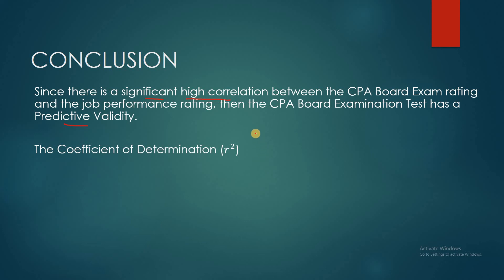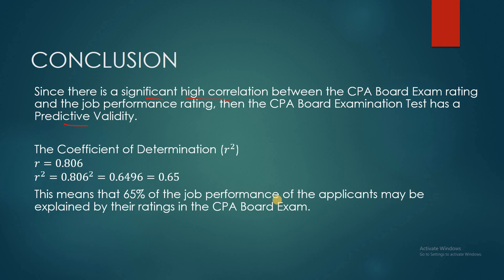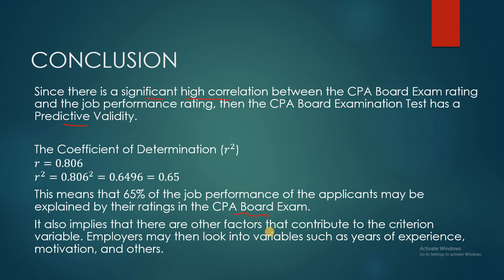We haven't talked about the coefficient of determination yet. This is simply the square of the computed R. Our computed R is 0.806, and squaring this gives 0.65. This means that 65% of the job performance of the applicants may be explained by their ratings in the CPA board exam. The remaining 35% implies that there are other factors contributing to the criterion variable — job performance. Employers may then look into other variables such as years of experience, motivation, and others.